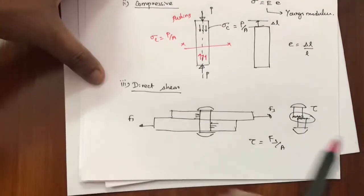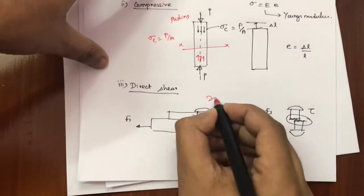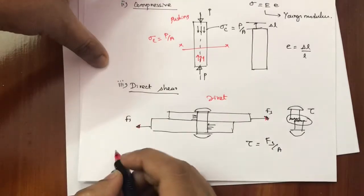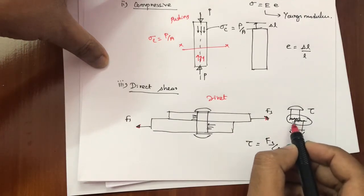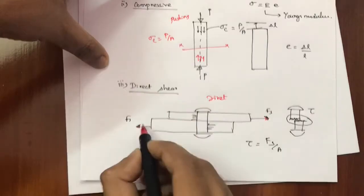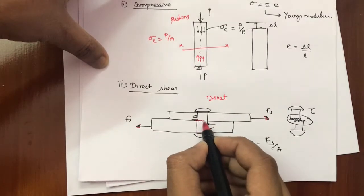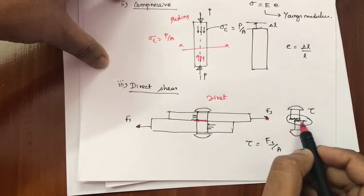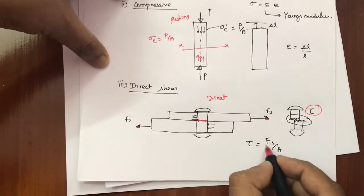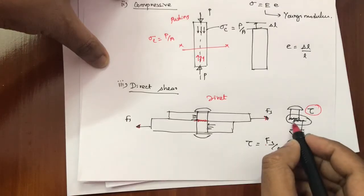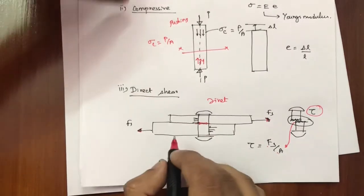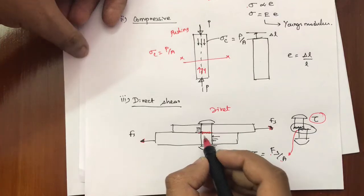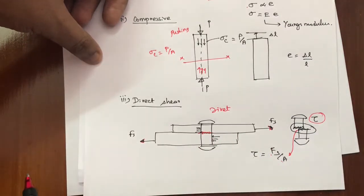Next is direct shear. Take the example of a rivet: when two plates are connected by a rivet and a load is applied, the middle portion of the rivet undergoes sliding of material. When the load exceeds a limit, there is a chance of sliding at the middle of the rivet. Due to sliding of atoms and molecules, shear stress is generated, which is the direct shear force divided by the cross-sectional area of the rivet.